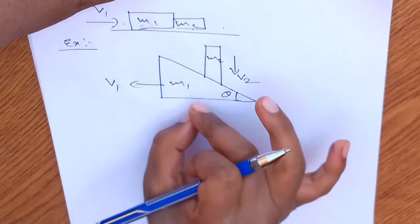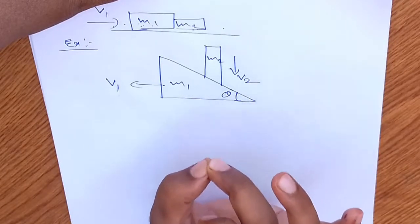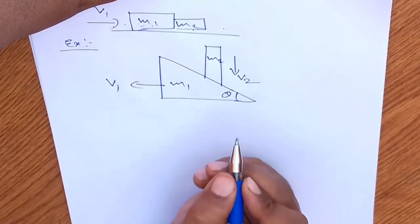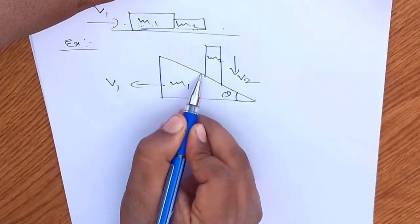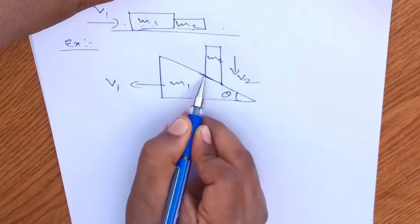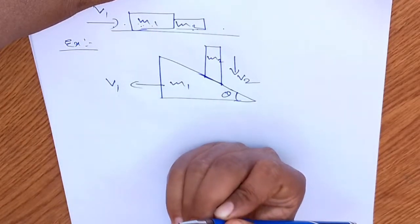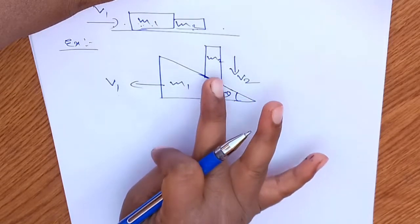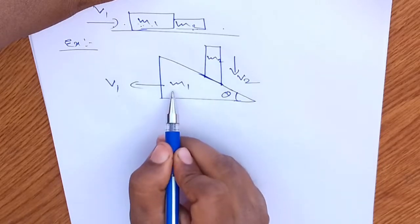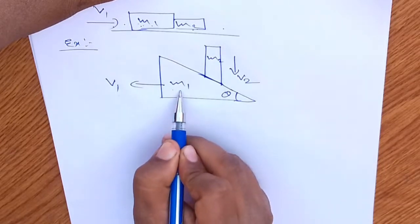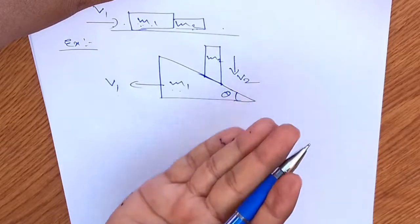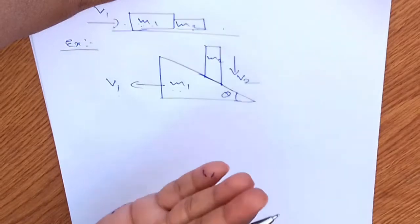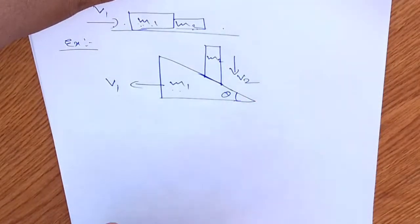If the two bodies are in contact — remember this — you need to identify the point of contact. This is the point of contact. What you have to do is take all the components of the velocity of blocks m1 and m2. The velocity components of block m1 and m2 perpendicular to the common tangent will remain the same.